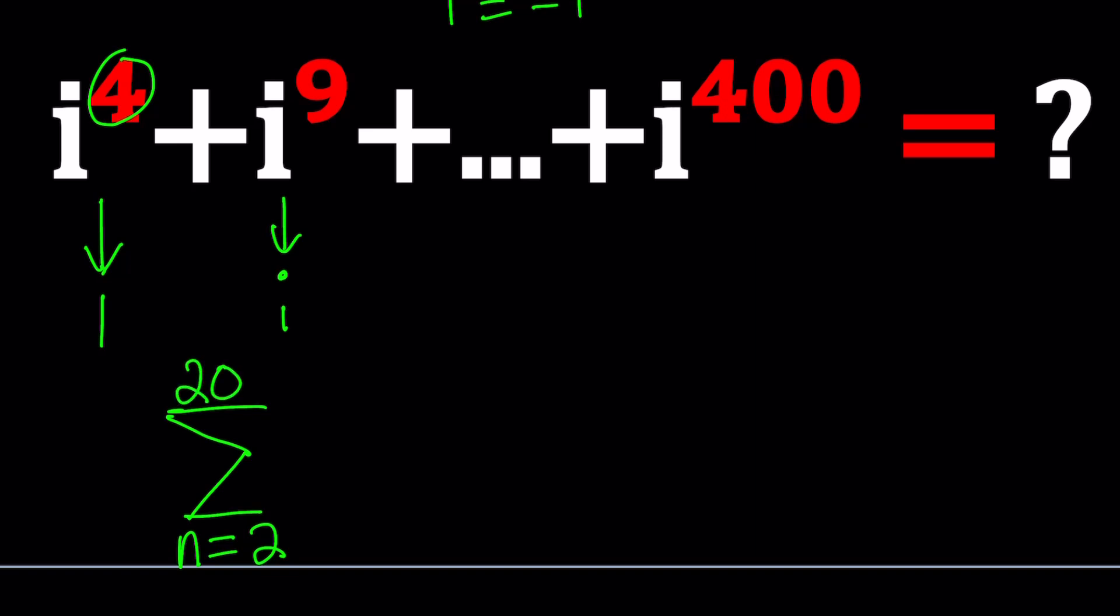Since it starts with 2 squared, I'm going to start at 2 and end at 20. So n equals 2 through 20. And we're talking about sums of powers of i, where the power is basically n squared. So we were able to express how compact, right? Express the sum using the sigma notation.